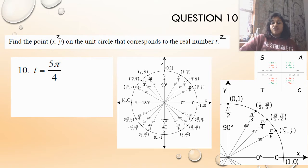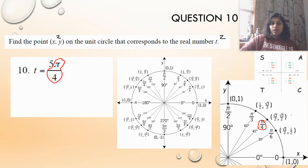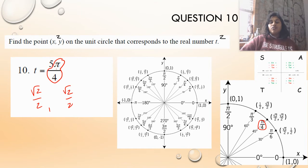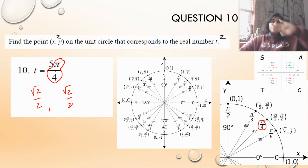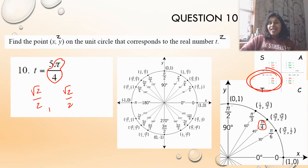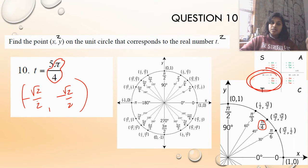If I'm using the entire unit circle, I just go over to 5π over 4, which is right here, and I find the coordinate point. But what if I just have the first quadrant memorized? I go over to π over 4 because that's my root, and my answer begins with square root of 2 over 2. Then I figure out that 5π over 4 is in quadrant 3, so the only thing positive is tangent, meaning sine and cosine must both be negative.